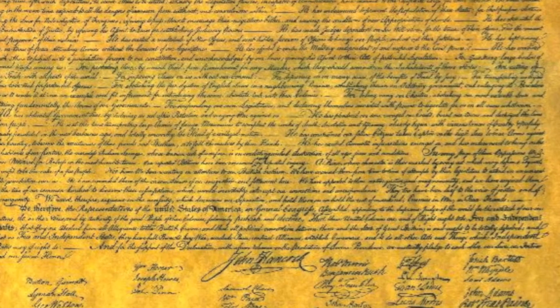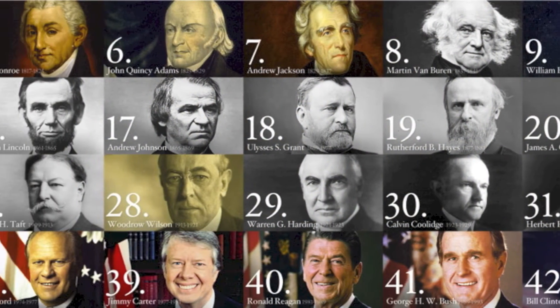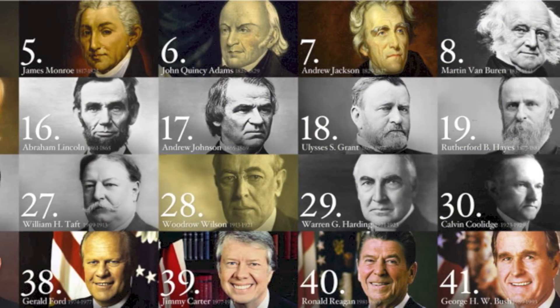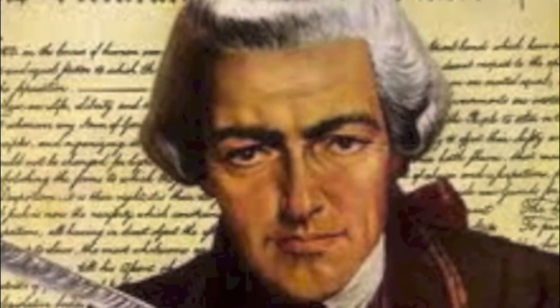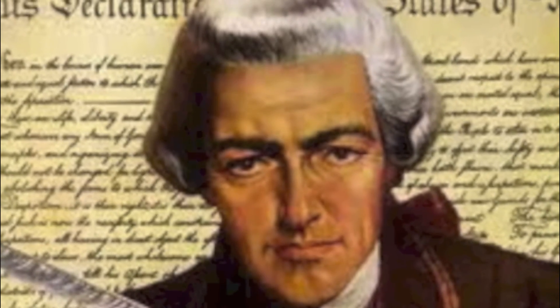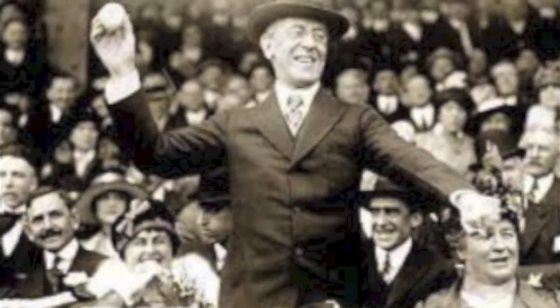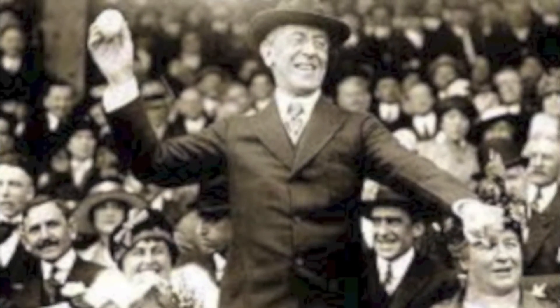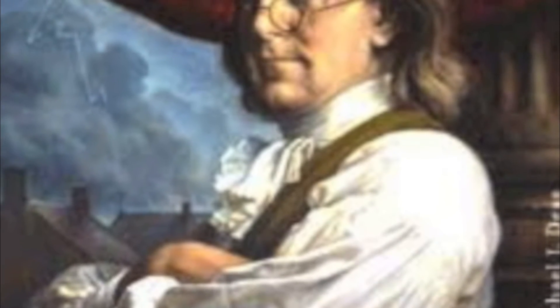As an example, if we take all the signers of the Declaration of Independence and the set of all US presidents, then the elements will be people, like John Hancock and Woodrow Wilson. The union of these two sets will be all of the people — presidents and signers alike.